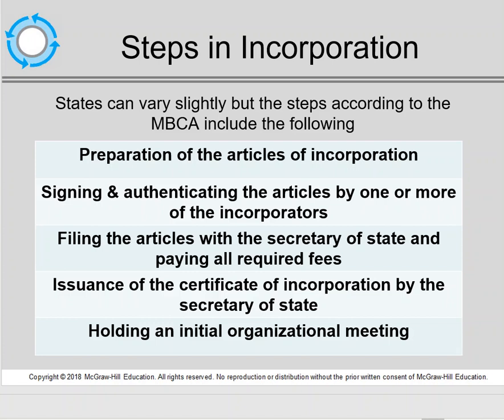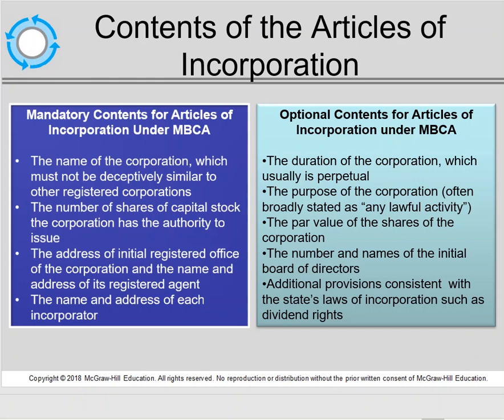The first step is to prepare the Articles of Incorporation. There are certain things that must be in the Articles of Incorporation and certain optional things that really should be included. Mandatory items are the name, the number of shares, the address of the office, the registered agent, and the name and address of each incorporator. Optional items include the duration of the corporation (usually perpetual), the purpose of the corporation (broadly stated as any lawful activity), the par value of the shares, the number and names of the initial board of directors, and any additional provisions.